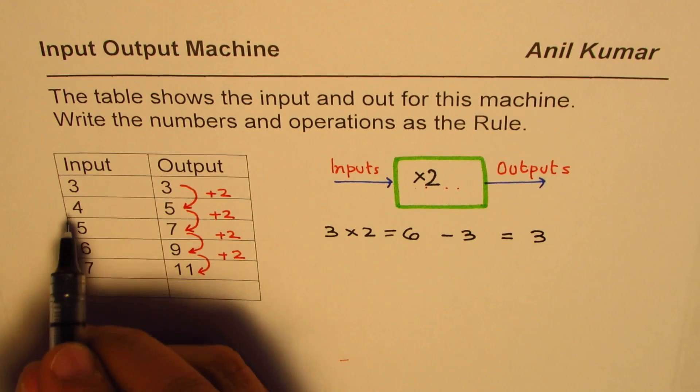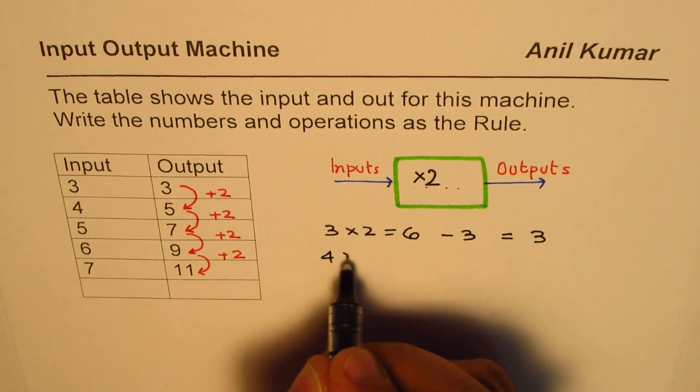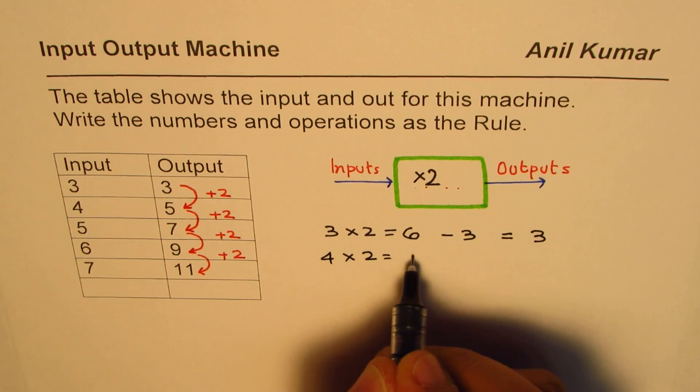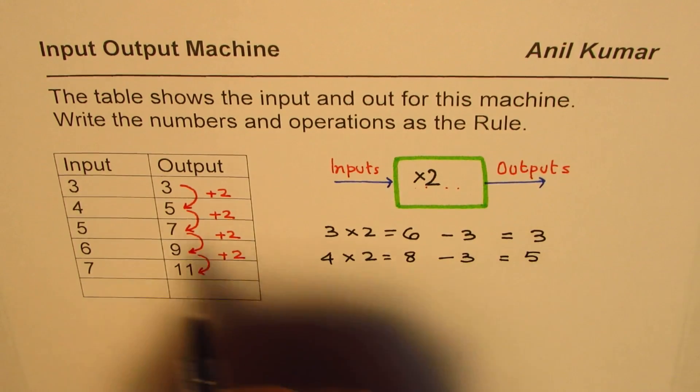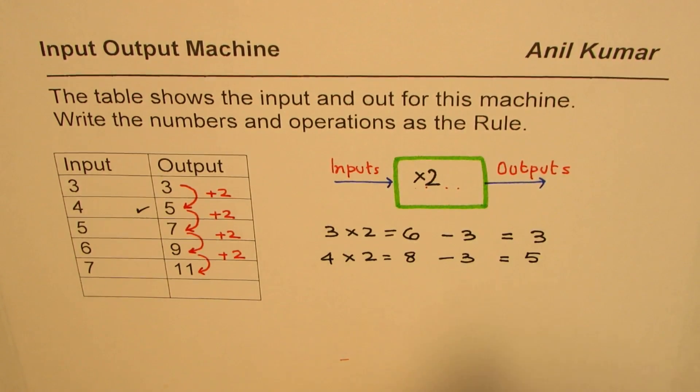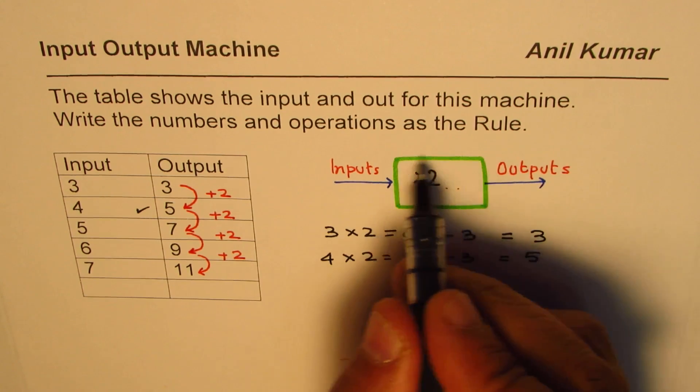Let me try with 4 now. 4 times 2 is 8, and if I take away 3 what do I get? I do get 5 - that is correct. So that means the operation the machine is doing is times 2, take away 3.